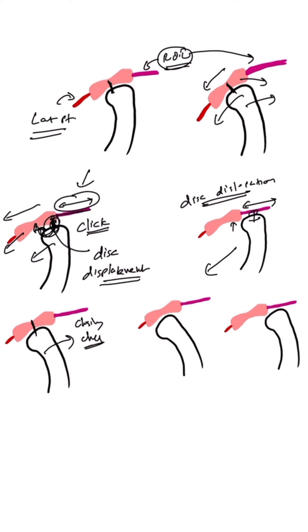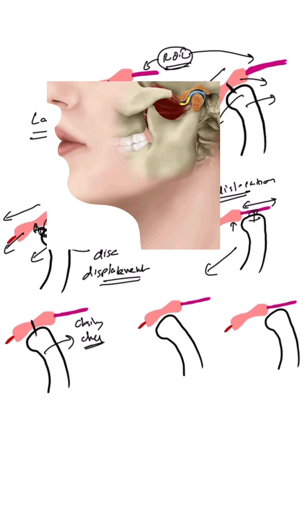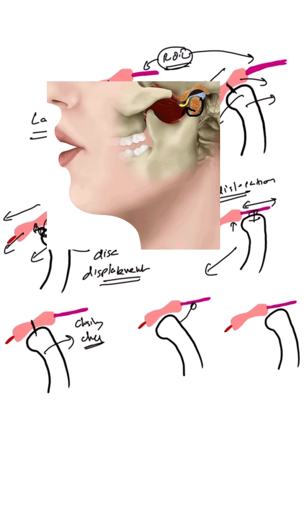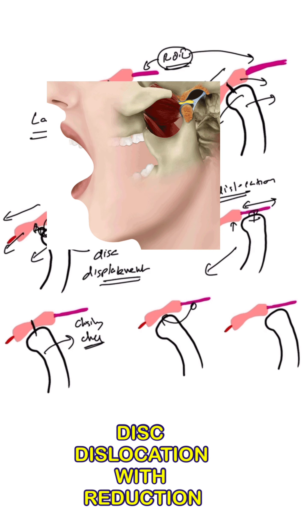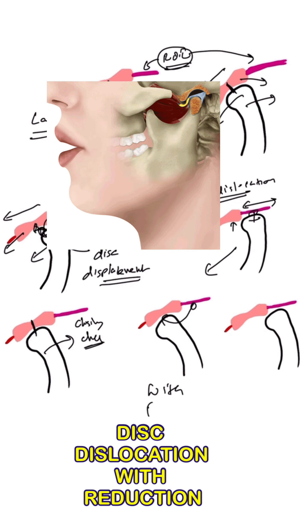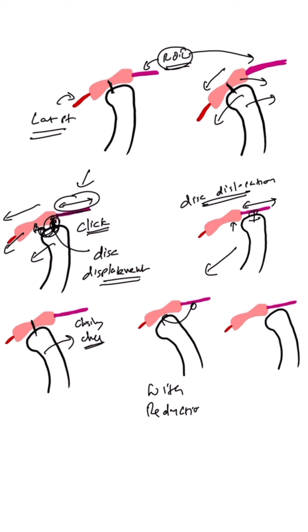In the first scenario, from the retrodiscal lamina, the condyle will go to the central portion. This is known as disc dislocation with reduction. With reduction means the condyle is able to go back to its central portion. So here, while opening, you will also hear a click, and while closing, when it goes back to the retrodiscal lamina area, there will also be a click — that is opening and closing click.